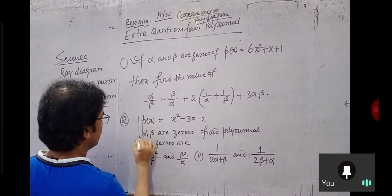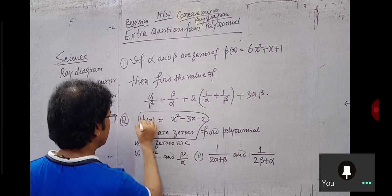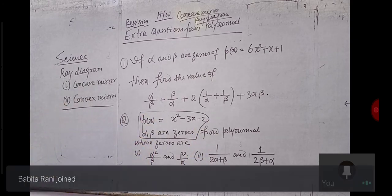The zeros of the polynomial are identified.